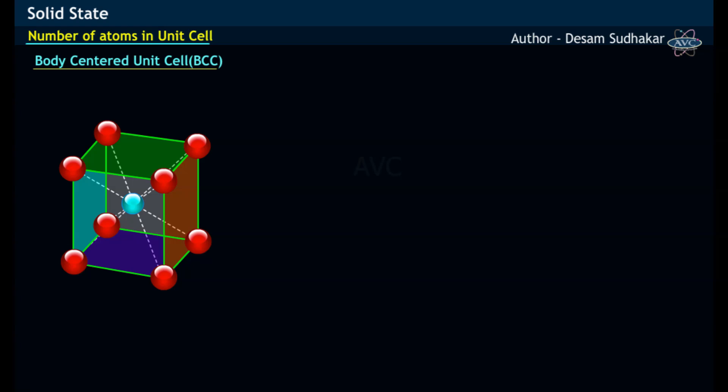A body-centered cubic unit cell consists of a cube with eight corners occupied by one atom each. That is, eight corners are occupied by eight corner atoms, while one atom is present in the center of the cube.